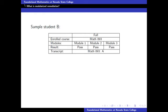Sample student B has also placed into math 93. During her first semester, she has completed all three modules. For the exact same reasons as before, the student will receive an A in math 93.